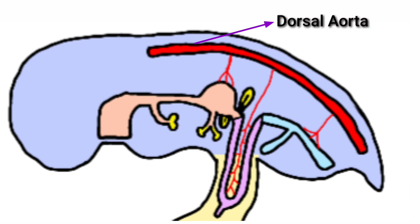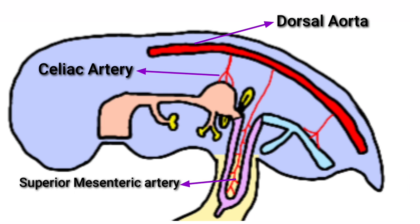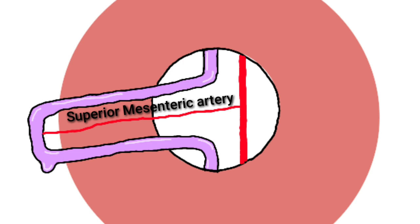This is the dorsal aorta and it gives many branches, but during the course of development, many of them regress and only three remain permanent. One, this is the celiac artery which supplies the abdominal part of foregut. This is the superior mesenteric artery which supplies the midgut, and finally this is the inferior mesenteric artery which supplies the hindgut. This hole is the opening to the umbilical cord. The area facing you is the outside of the embryo.